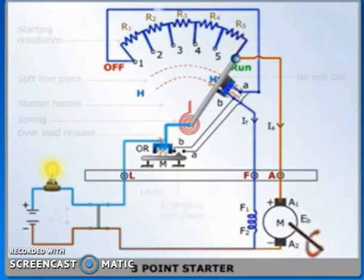Next, the field current flowing through the HC coil produces a force of attraction greater than the spring pull. In view of this, the handle H is held in the run position, and the entire starting resistance is cut off. The holding magnet or coil HC is also called no-volt release.